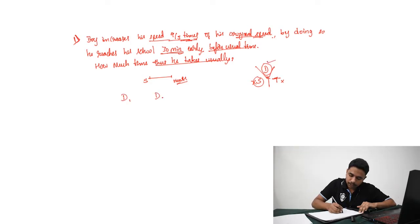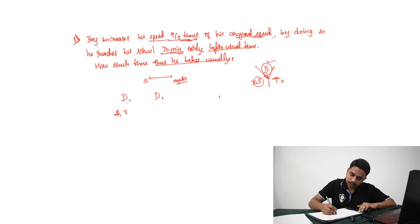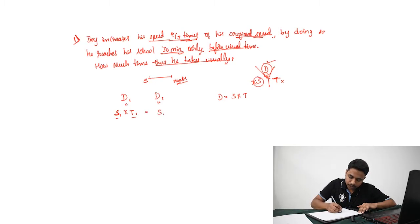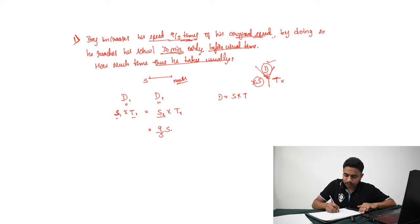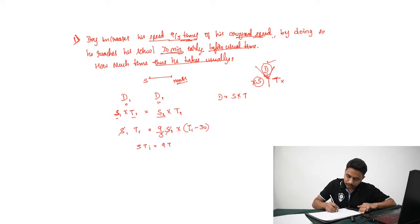We write D in the first case and D in the second case. In the first case, the boy travels with usual speed S1 and usual time T1, so distance equals S1 times T1. In the second case, he increases speed to 9/5 times the original and the time becomes T2, reaching 30 minutes early. Setting the two distances equal, S1 cancels and 5T1 equals 9(T1 minus 30). Solving this, T1 equals 67.5 minutes.